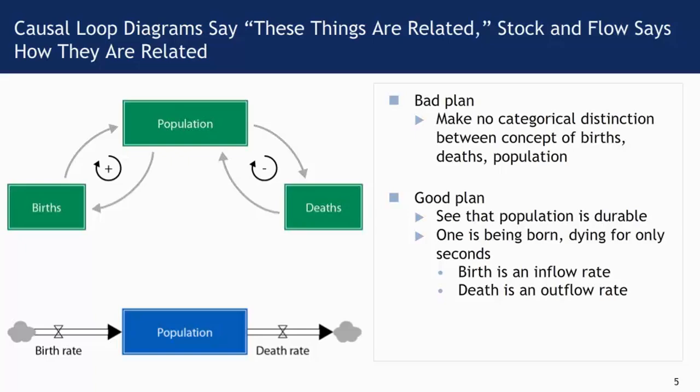But something bad about the causal loop diagram is that it makes no categorical distinction between what is a birth, what is a person, and what is a death. In fact, these are incredibly different concepts. One is born for just about a few seconds and one is dying for just a matter of seconds. But one is a person for 70 or 80 years. These are very different things.